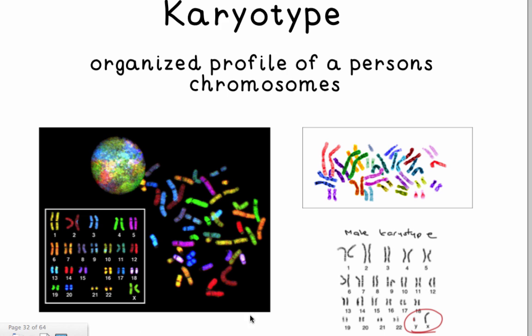In these pictures you can see three different types of karyotypes. In here you can see karyotypes that have not been organized, and in here you can see how people have taken out all of the chromosomes and organized them based on sizes.